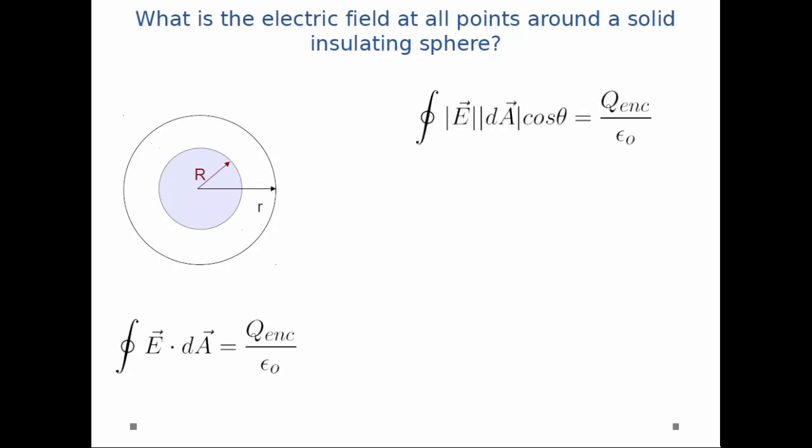So first we can expand the dot product. Let's analyze the cosine term. In this case, the area vector and the electric field point in the same direction. Cosine 0 is just 1.